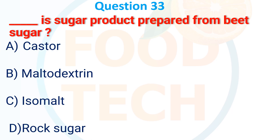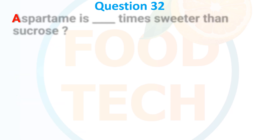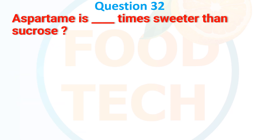Question 32: Which is a sugar product prepared from wheat sugar? A. Castor, B. Melon, C. Isomalt, D. Rock sugar. The answer is C. Isomalt.